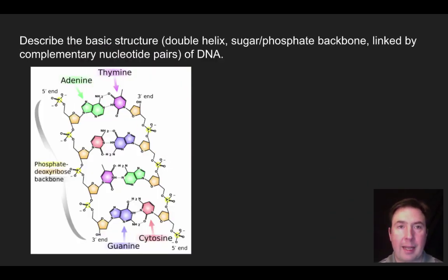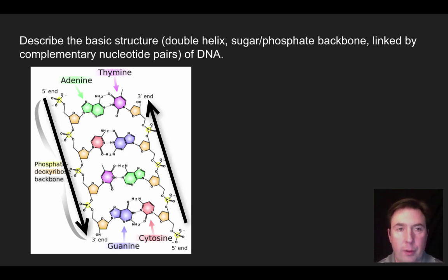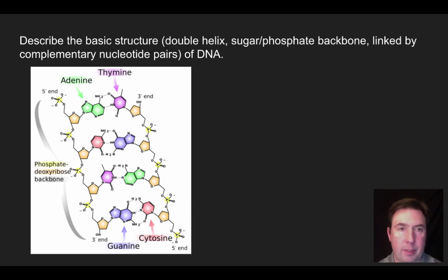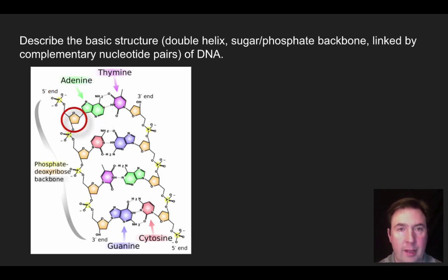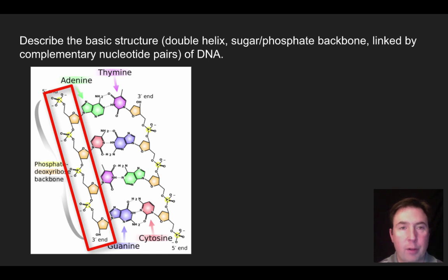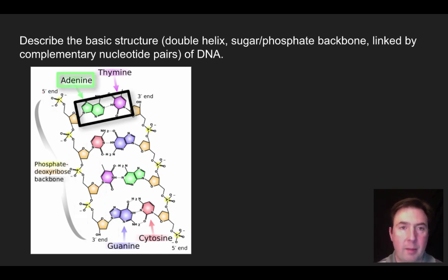Looking at the structure of DNA: two strands run anti-parallel, with a five-prime end on one strand running to a three-prime end, and the opposite strand running five-prime to three-prime in the other direction. Each nucleotide is made up of a phosphate, a five-carbon sugar (in this case deoxyribose), and a nitrogenous base. There are four nitrogenous bases: adenine, thymine, guanine, and cytosine. The backbone is made of phosphates and sugars, with the nitrogenous base sticking off into the middle — complementary to the base on the anti-parallel strand.